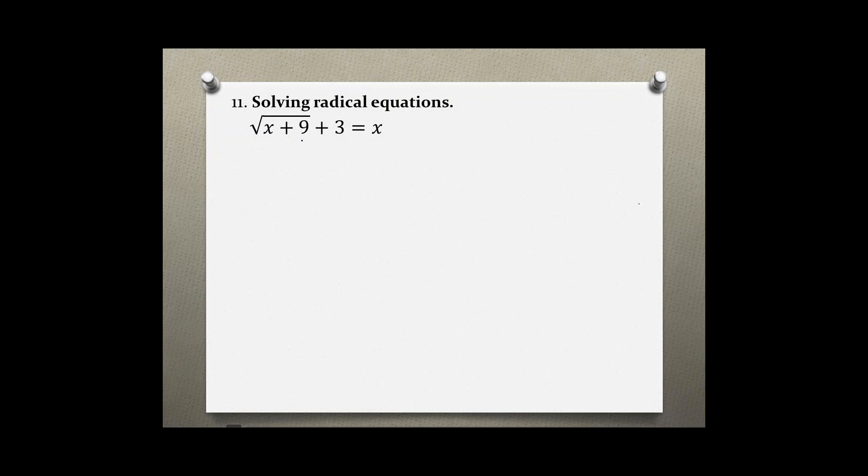To use our property we have to isolate the radical, and we can do that by subtracting 3 from both sides. That gives us the square root of x plus 9 is equal to x minus 3.